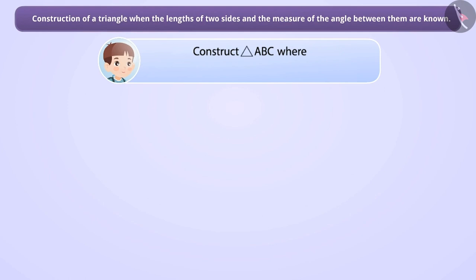Rahul has to construct a triangle ABC. In triangle ABC, we are given that the length of the side AB is 2.7 cm, the length of side BC is 4.7 cm, and the angle B measures 65 degrees.